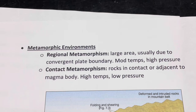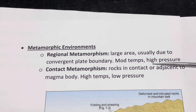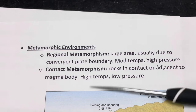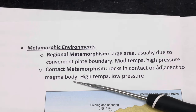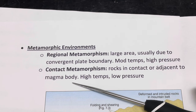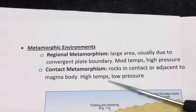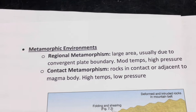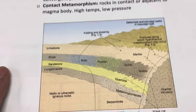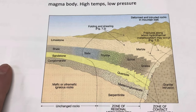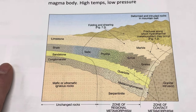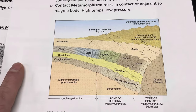Another type of metamorphism that's possible is if you have some subterranean magma body — a magma chamber or magma that's in the subsurface. The rocks that are touching that will tend to form metamorphic rocks, and that's what we call contact metamorphism.